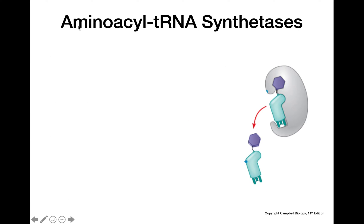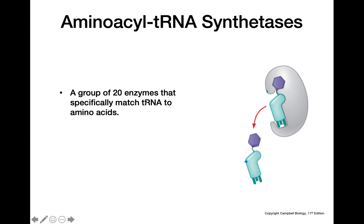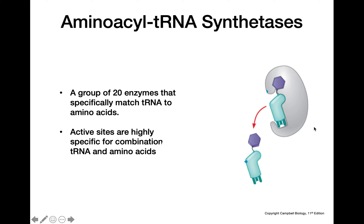Moving on to aminoacyl tRNA synthetases — this is a group of 20 enzymes that match a particular tRNA to the correct amino acid. The active site in this enzyme, which is the gray portion shown here, is highly specific for a particular combination of tRNA and amino acid.